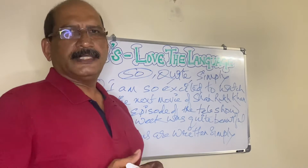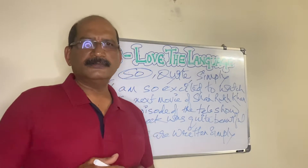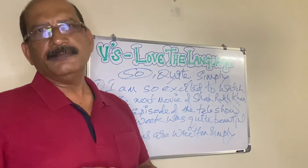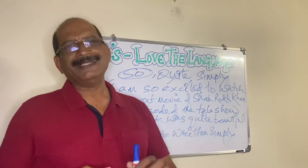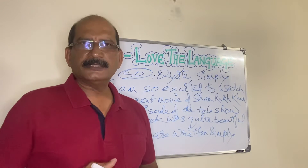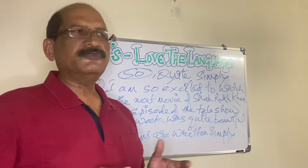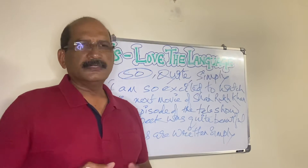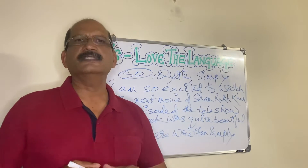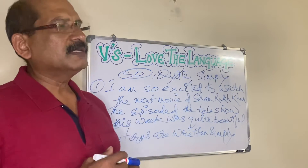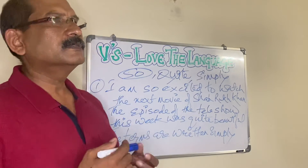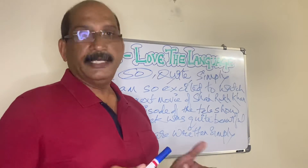Coming to tenses, I told you earlier — this is the trickiest part of English grammar, slightly complicated. There is no other part as complicated as tenses. You all know there is present tense, past tense, future tense. If you take present tense: simple present, present continuous, present perfect, present perfect continuous. Like — I did something, I have been doing something, I was doing something, I am doing something.